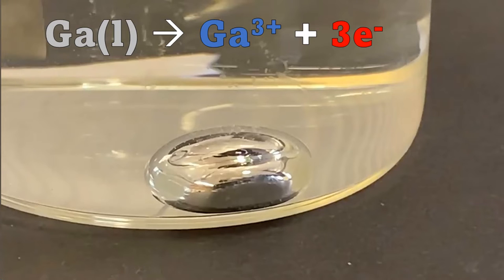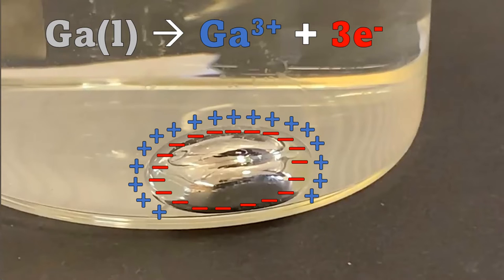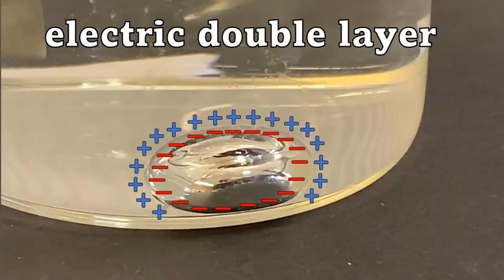The positive gallium ions that form enter the acidic solution, leaving behind negatively charged electrons on the droplet surface. The process results in what is known as an electric double layer, negative charge on the droplet surface and positive charge just outside the surface.